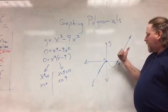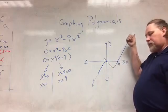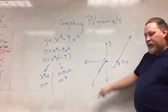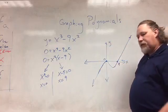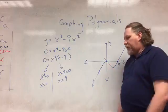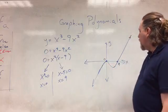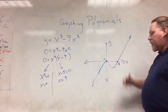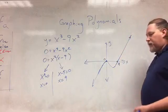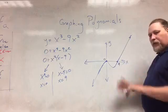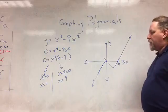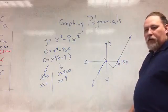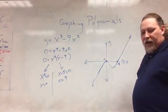As we go to the left, the graph has to go downward toward negative infinity — that's the left-end behavior. As we go to the right, the graph has to head upward toward positive infinity — that's the right-end behavior. And here is our complete graph.